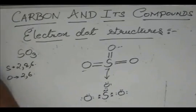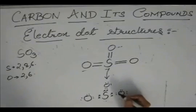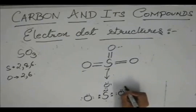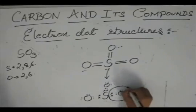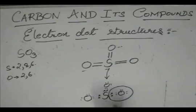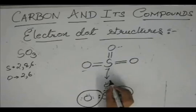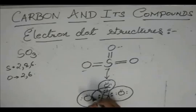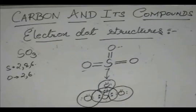So used to drawing elements all around — this oxygen gets two electrons of the sulfur, this oxygen gets the two electrons of this sulfur, this oxygen gets the two electrons, and sulfur gets two electrons each from all the oxygens.